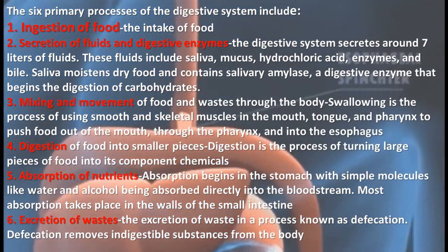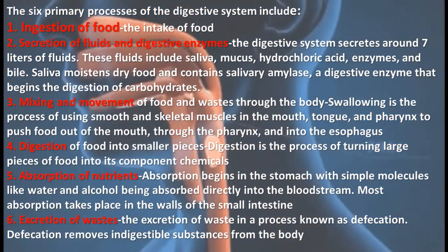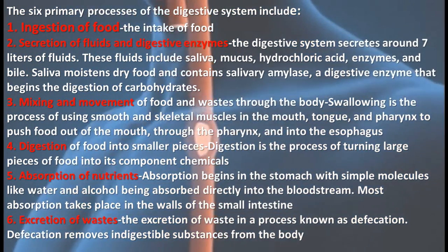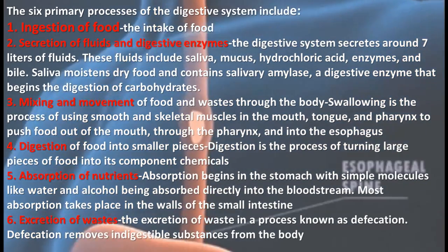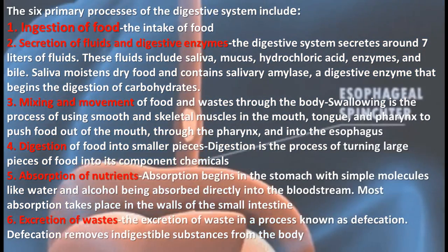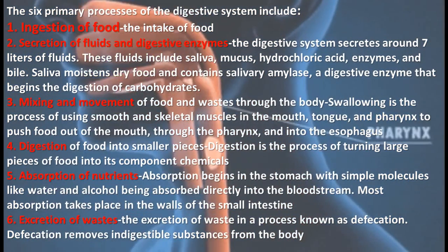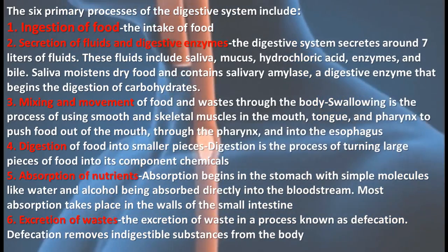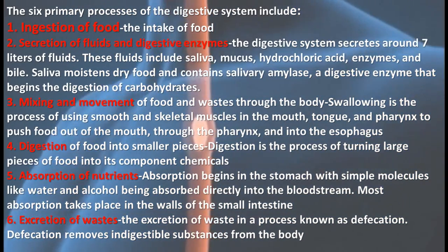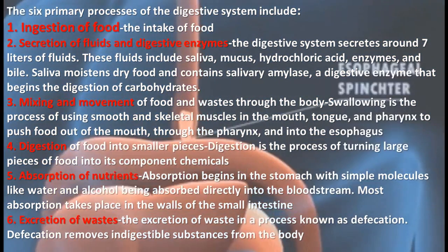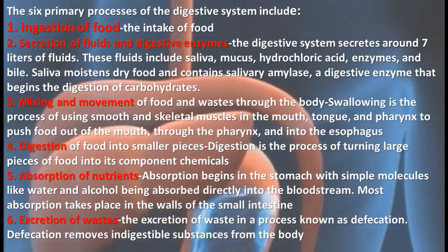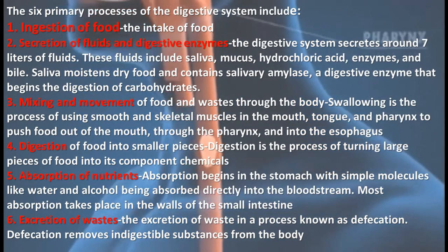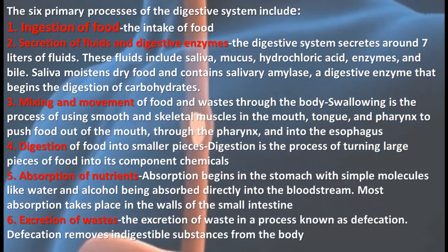The fourth process is digestion — breaking food into smaller pieces and turning those pieces into small components. The fifth is absorption, which begins in the stomach with simple molecules like water and alcohol being absorbed directly into the bloodstream.